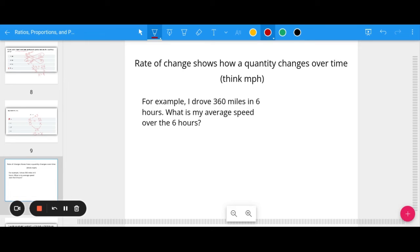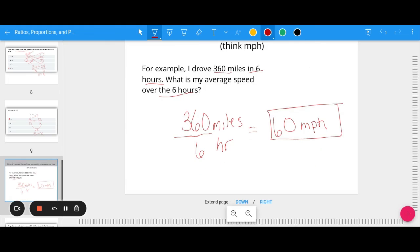Last part of our video: let's talk quickly about rate of change. Rate of change shows how a quantity changes over time, and I want you to think about miles per hour. Say I drove 360 miles in six hours. What is my average speed? I would take the 360 miles and divide it by six hours. 360 divided by six is 60. Miles over hours, that's the same thing as miles per hour. This would be 60 miles per hour as your average speed.